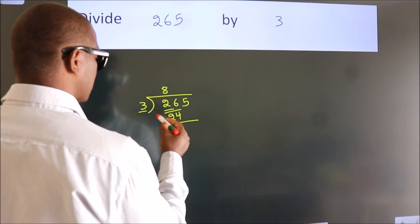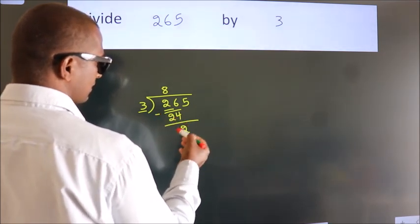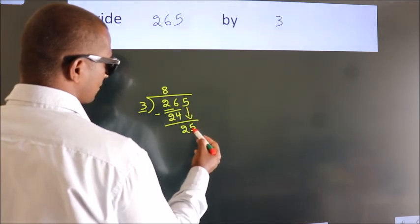Now we should subtract. We get 2. After this, bring down the next number. So 5 down. So 25.